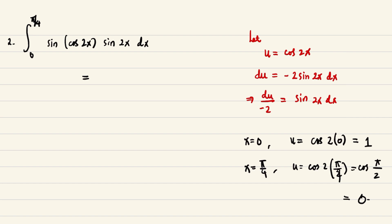This becomes -1/2 the integral of sin u du from 1 to 0. What is the integral of sin u? This is cosine. Cosine of u. So -1/2 cosine of u evaluated from 1 to 0. Let me correct this: integral of sin u is negative cosine, so this becomes positive 1/2 cosine u.